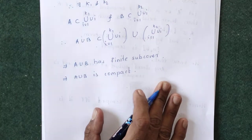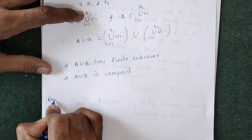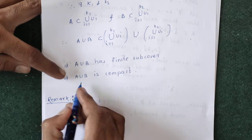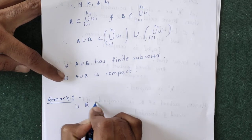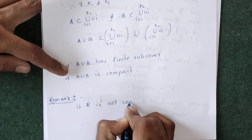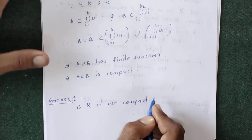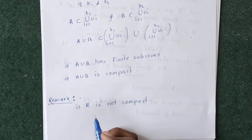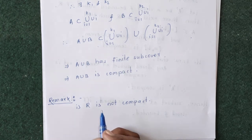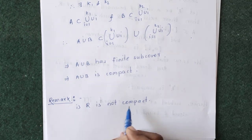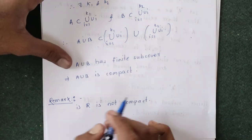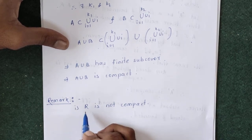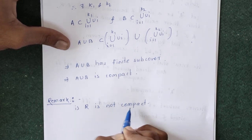An important remark: R is not compact, because a subset of R is compact if and only if it is closed and bounded, but R itself is not bounded. So R is not compact. R is a complete metric space but not a compact metric space.